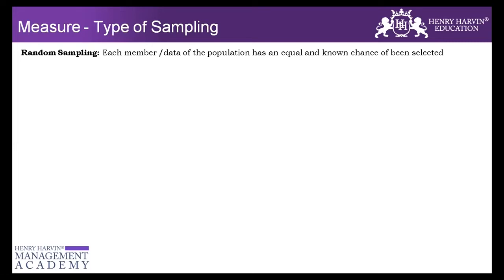Why do you think sampling is required? Why can't we work on the entire population? Because collecting data for the entire population is not necessarily feasible economically, and for various operational reasons as well. It's always better to go for a sample — economically it's not viable, it takes a lot of time, and it's operationally not possible either. Also, a sample of the data can be representative of the entire population.